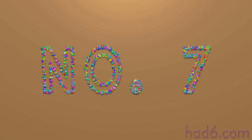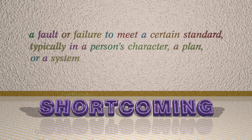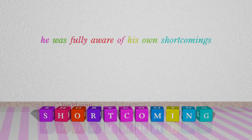Number 7: Shortcoming. Which means a fault or failure to meet a certain standard, typically in a person's character, a plan, or a system. For example: He was fully aware of his own shortcomings.